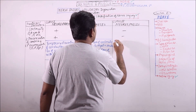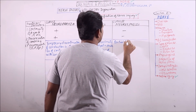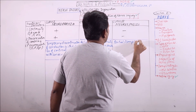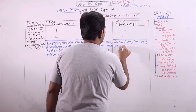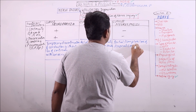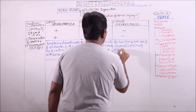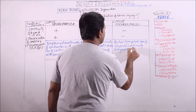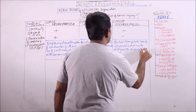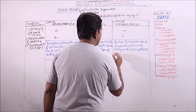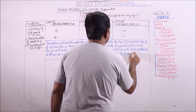Neurotmesis is partial or complete loss of axonal continuity, along with disruption of the myelin sheath and connective tissue framework.